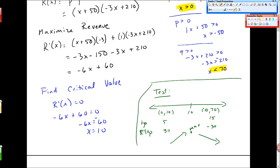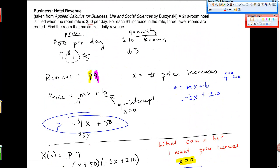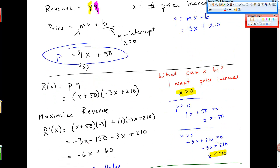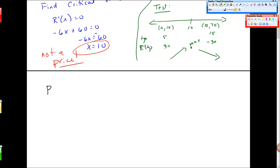Now, I have to also keep in mind that this is not a price. It's the number of price increases. So when I go back and it says, what's the price point? Let's find, find the price point that maximizes daily revenue. I have to plug that in, but see, I have this equation for price here. It's x plus 50. So I'll go down here. Price is x plus 50. So price is 10 plus 50, which is equal to $60.